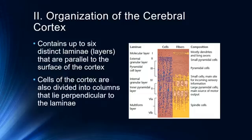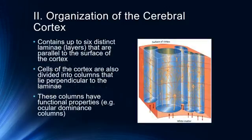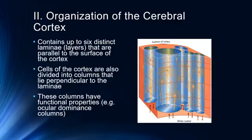These six laminae are parallel to the surface of the cortex and are also divided into columns that lie perpendicular to the laminae. As you can see in this illustration, there are clear columns with functional properties. We'll discuss these columns when we talk about the primary visual cortex — for example, ocular dominance columns, which process information from the left and right visual fields and eyes, and are one of the ways depth perception is developed. The stimuli these columns respond to vary systematically from one column to the next.